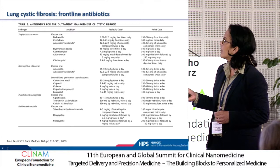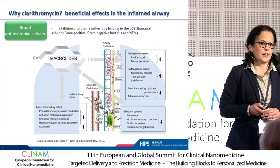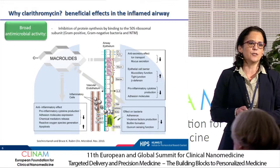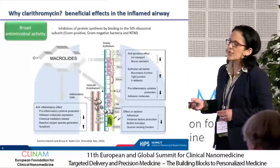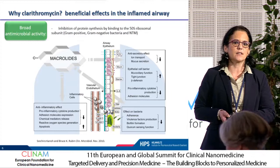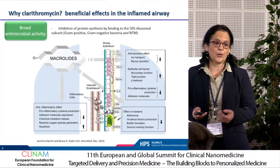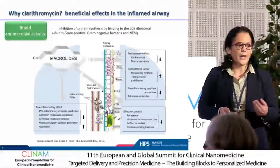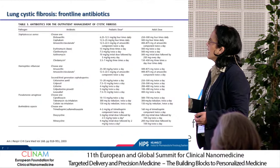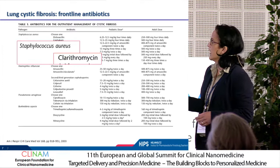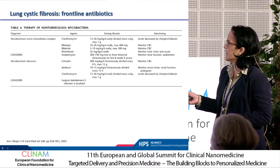Why did we choose clarithromycin? Clarithromycin is an antibiotic — it's a macrolide — and it is commonly used in the clinic for CF treatment. Besides the anti-inflammatory activity that is really important in the context of CF disease, it has broad antimicrobial activity, making it a good candidate to bring drugs against both pathogens. It is indeed a frontline antibiotic against CF lung infection, used for both CF and M. abscessus infections.